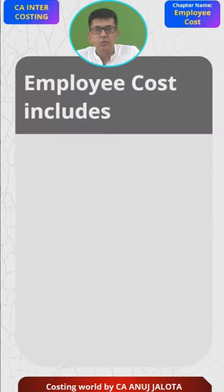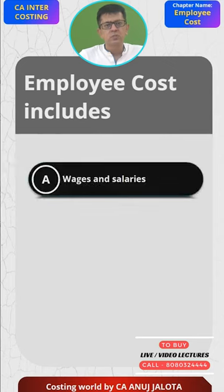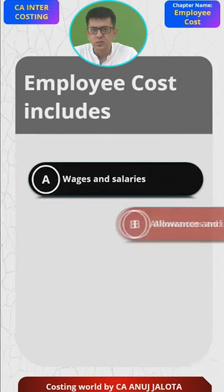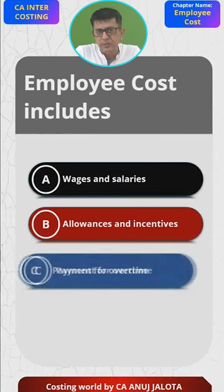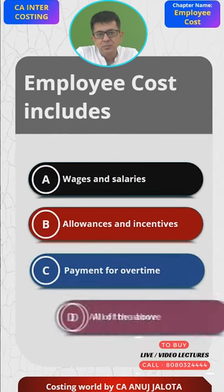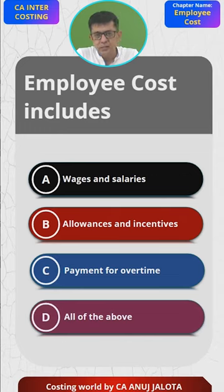Let's start. Today's question: what does employee cost include? Option A: wages and salaries. Option B: allowances and incentives. Option C: payment for overtime. Option D: all of the above.